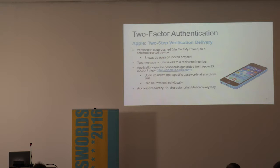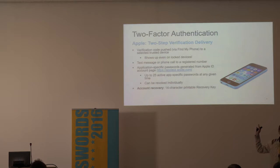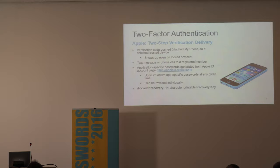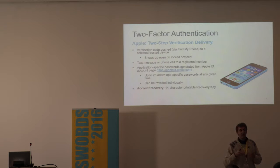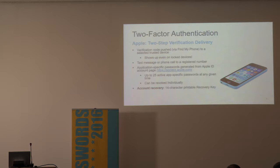Two-step verification requires an additional verification code — basically six digits — that can either be pushed to your trusted device via the Find My Phone protocol, sent as a text message to your trusted phone number, or delivered as a phone call. You can also generate and use an application-specific password — a unique password that allows certain applications not compatible with two-step verification to still be able to log in.